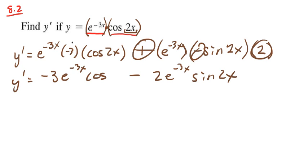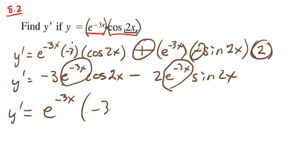You could go further because you have e to the negative 3x as a common factor. Pull that out - it's always a good idea. You get e to the negative 3x times the quantity negative 3 cos 2x minus 2 sine 2x. That would be your best simplified answer.